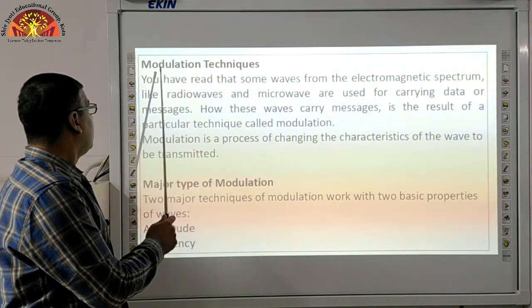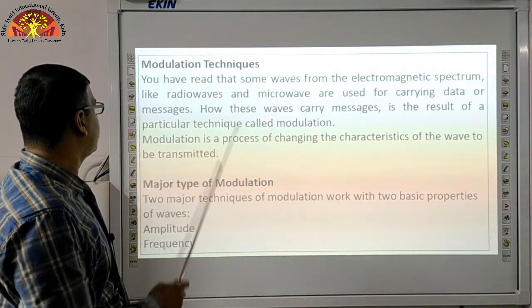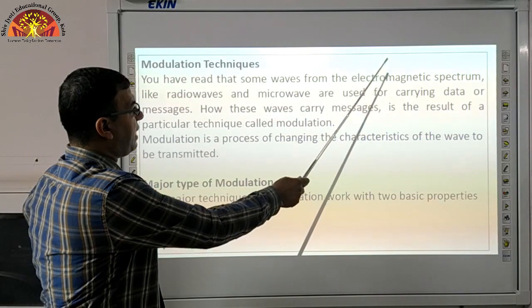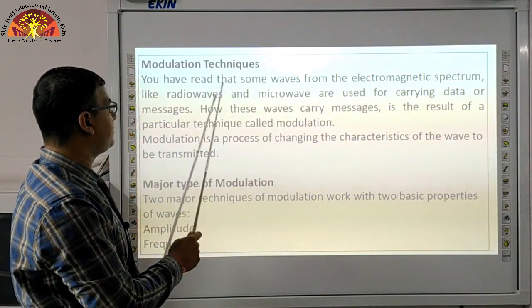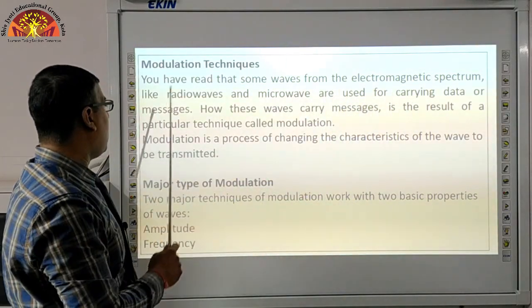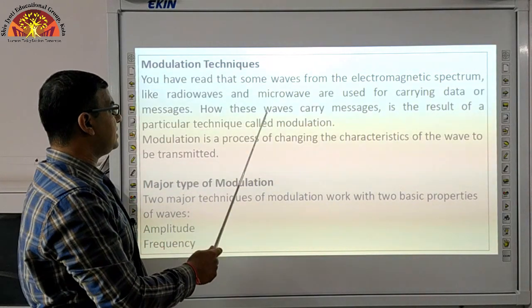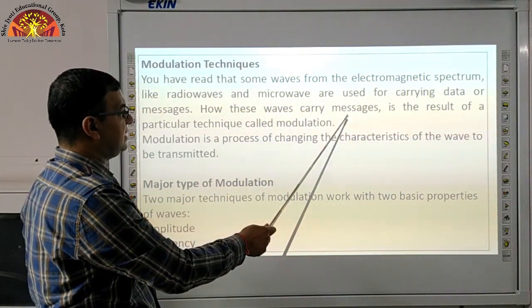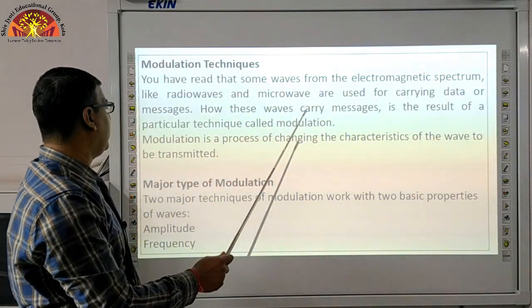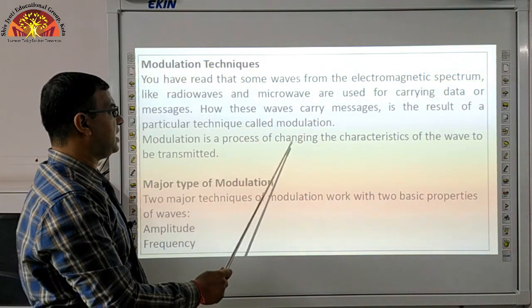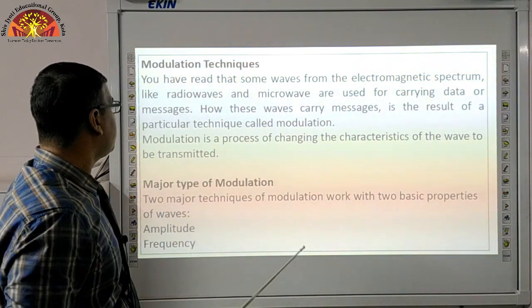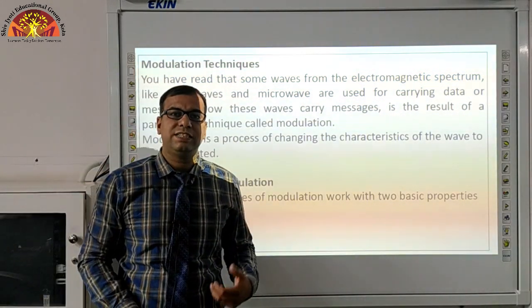Now, modulation techniques. You have read that some waves from the electromagnetic spectrum, like radio waves and microwaves, are used for carrying data or messages. These waves carry messages as a result of a particular technique called modulation. Modulation is the process of changing the characteristics of the wave to be transmitted.